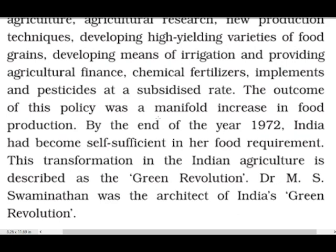The outcome of the policy was a manifold increase in food production. Ab ye sab cheezein jo sarkar ne uthaya tha, iska bahut hi zabardast tarike se asar dekhne ko mila aur food production bahut hi zabardast tarike se badhne laga. Isse dekhte hue, by the end of the year 1972, India had become self-sufficient in her food requirement. Jo anaaj ke maamle mein pehle doosre deshon pe dependent rehta tha, ab woh poori tarah se azad ho gaya tha.